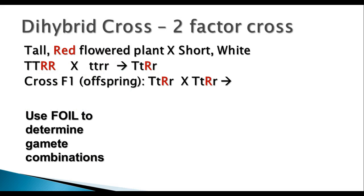A dihybrid cross — what we did before was a monohybrid cross, that's where you have just one factor that you're crossing. You can also do a dihybrid cross, which is a two-factor cross, so we're going to look at two traits at the same time. Because of the principle of independent assortment, these alleles do not influence each other's inheritance, so they're going to be separate things, but we can look at the two things together.